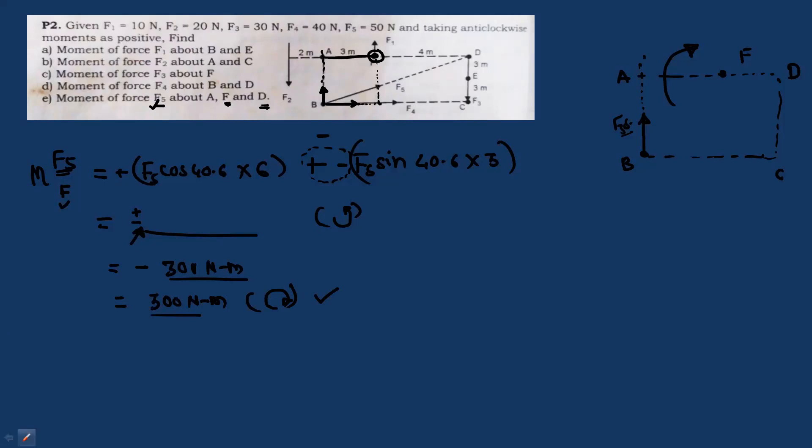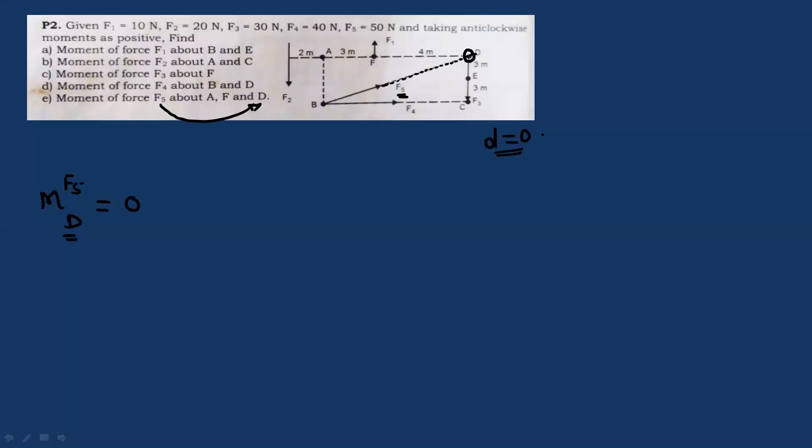For the last point D: the moment of F5 about point D is 0. Because if you extend the line of action of F5, it passes through point D. When the line of action passes through the moment point, the perpendicular distance is 0. So moment = F5 × 0 = 50 × 0 = 0.